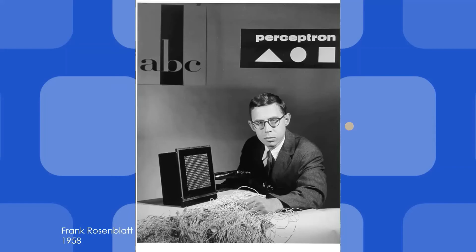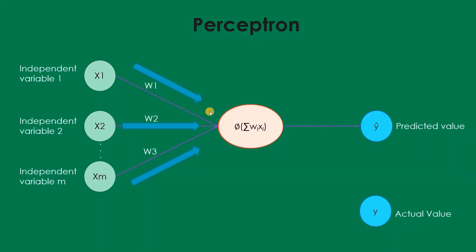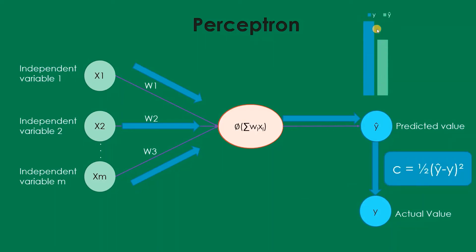Now let us talk about the perceptron, invented by Frank Rosenblatt around 1958. It has independent variables, weights, and an activation function that predicts a variable — we call that predicted value y-hat — and we compare it with the actual values of y. This kind of network is known as a single-layer feed-forward network. Rosenblatt wanted to produce something that could learn and adjust by itself. Looking at the y-hat chart versus the y chart, we can see a difference — our prediction is not correct, and there is an error gap.